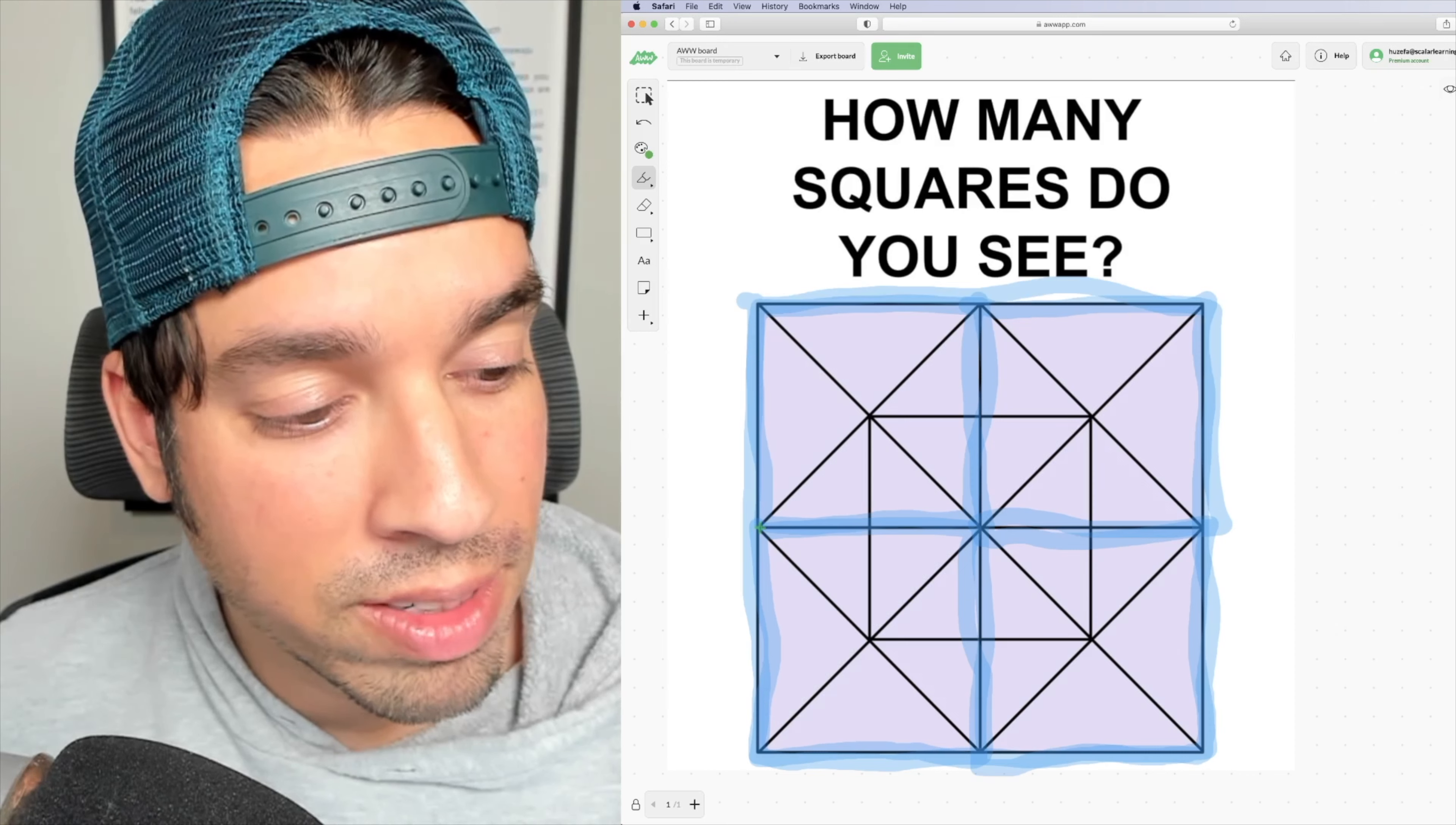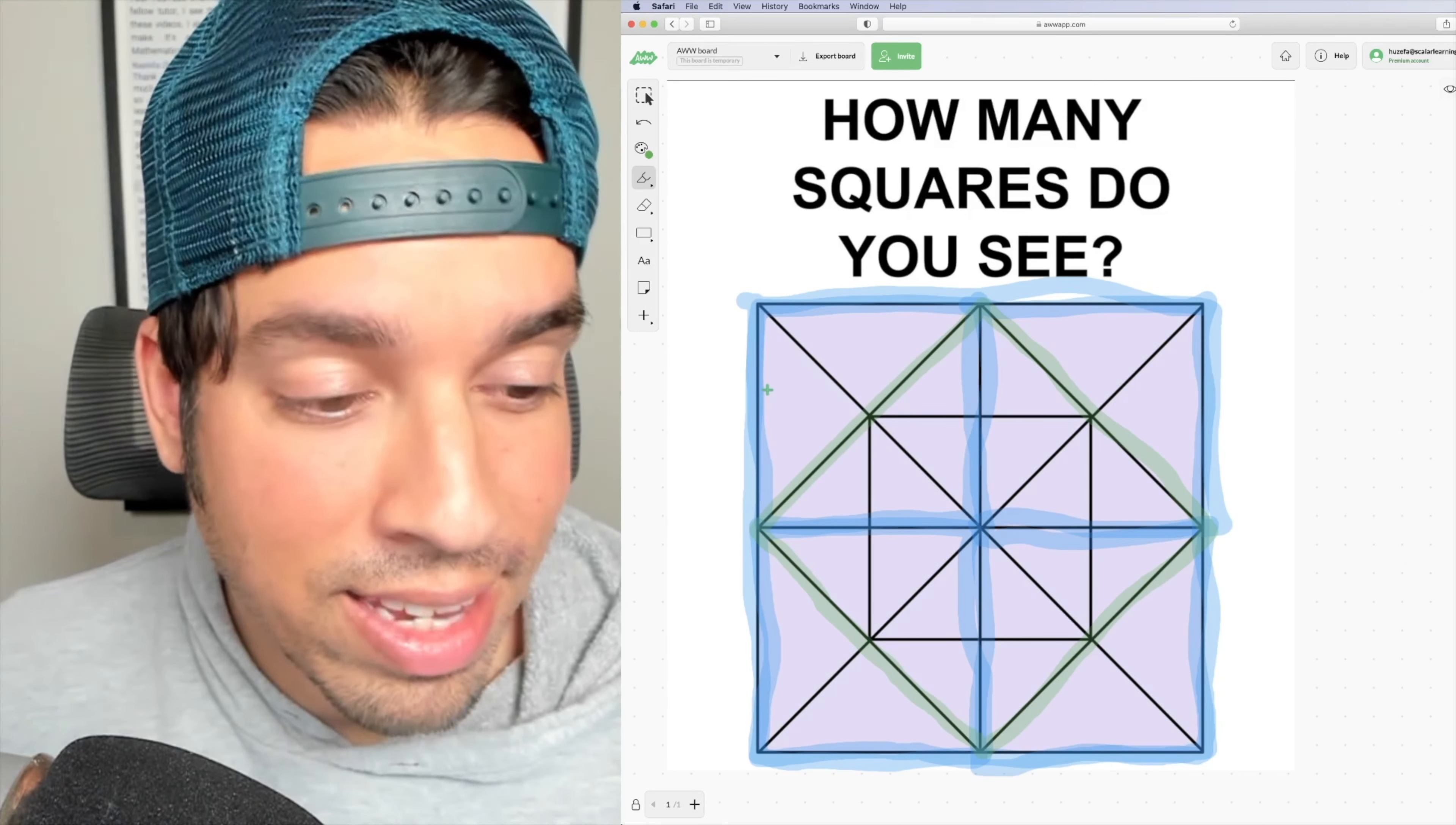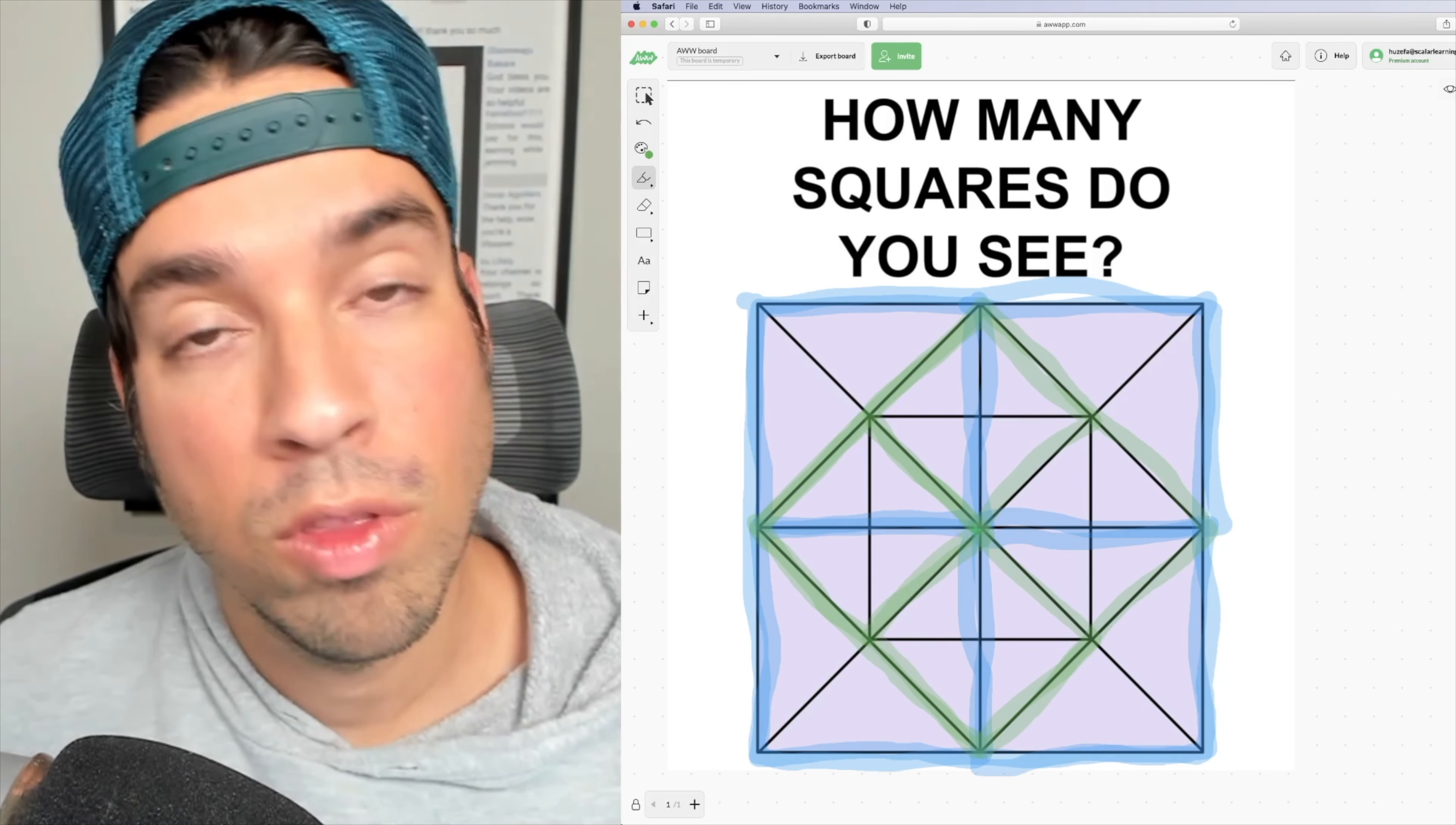After that, we've got this middle diagonal square. And then we've got a bunch of diagonal facing squares within this diagonal square. So I'm going to go ahead and highlight those. One, two, three, and four.